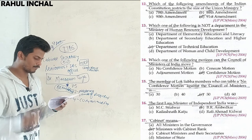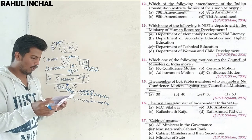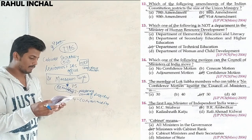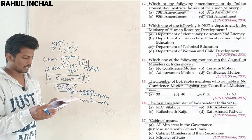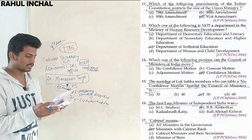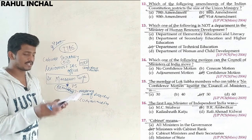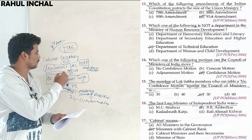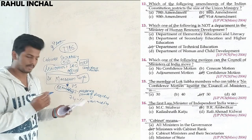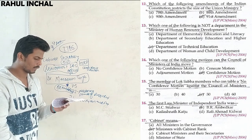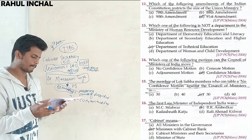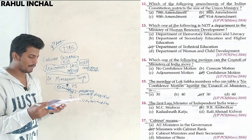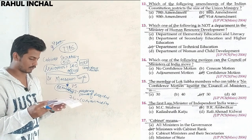What does 'Cabinet' mean? It does not mean all ministers in the governance. It means ministers with Cabinet rank only. It does not include Cabinet ministers and their secretaries, because the Cabinet Secretary is the senior-most IAS officer and is not a part of the Cabinet. Ministers of State are also not included. So Cabinet means ministers with Cabinet rank only.